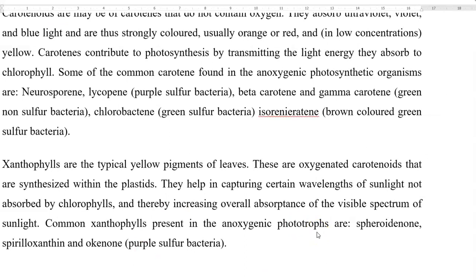The other form of carotenoid is xanthophyll, which is typically yellow-pigmented. They are commonly distributed in plant leaves. As already discussed, they are oxygenated carotenoid forms that may be synthesized within the plastids of the leaf. They play a major role in capturing certain wavelengths of sunlight and transmitting that energy to the chlorophyll molecule, thereby increasing the overall absorption of the visible spectrum by living systems. These xanthophylls are also found distributed in anoxygenic photosynthetic organisms. Commonly noticed xanthophylls are pyridinone, spiroloxanthine, and okinone, which are commonly found in purple sulfur bacteria.